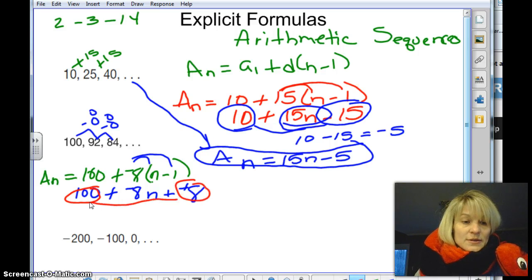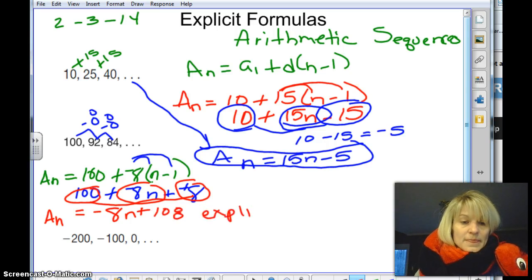So again, we have some common terms here. I have 100, and I have 8. So I know together, those are 108. So I'm going to bring this forward. I'm going to bring down my a sub n again, the arithmetic sequence of n. I don't know what it is. Negative 8n. And then I have 100 plus 8, which is 108. And this is my explicit formula for this equation, or for this sequence.